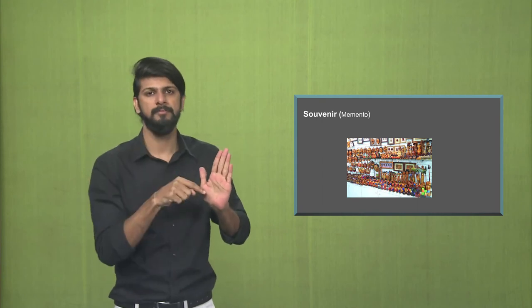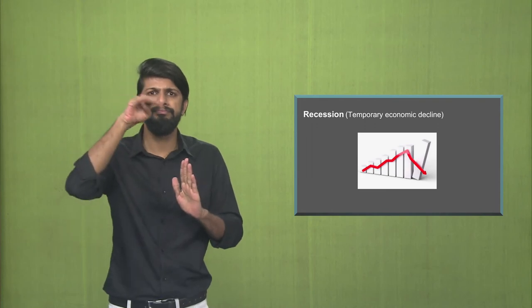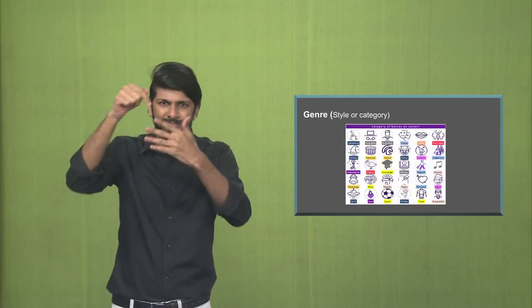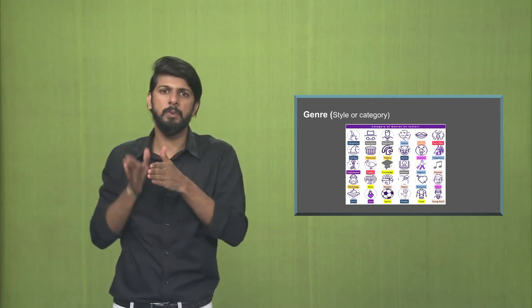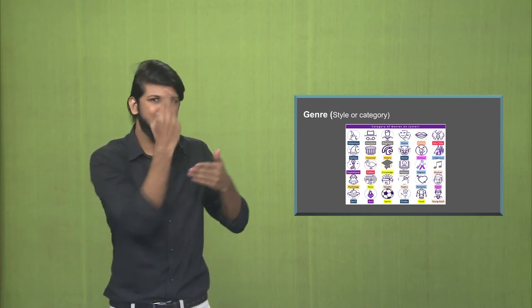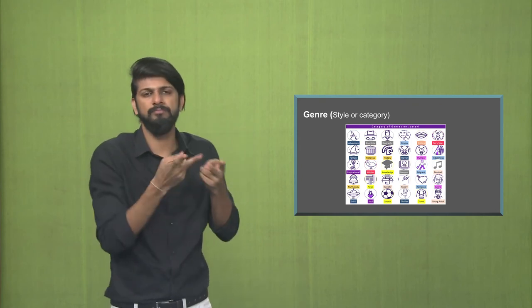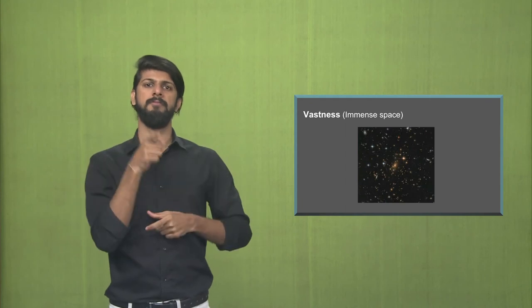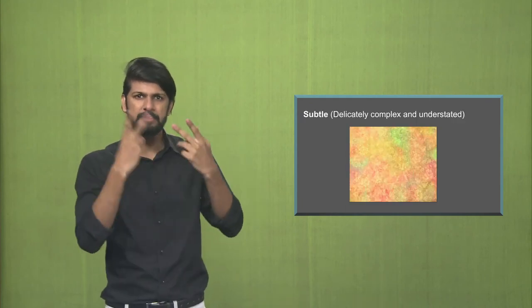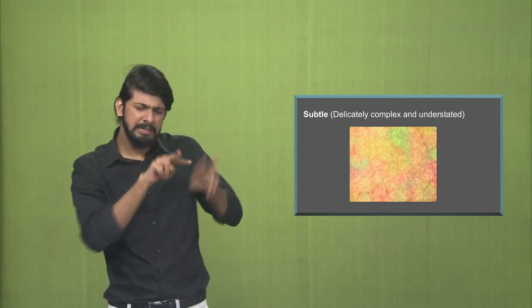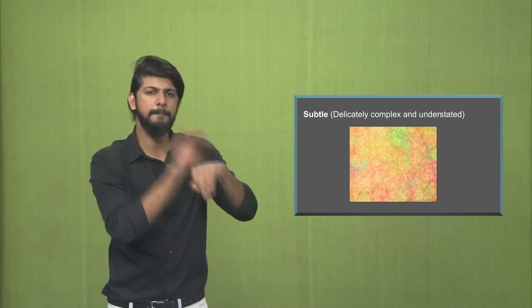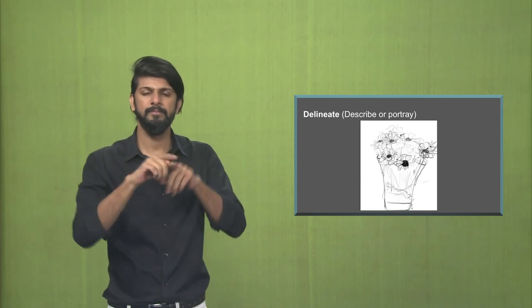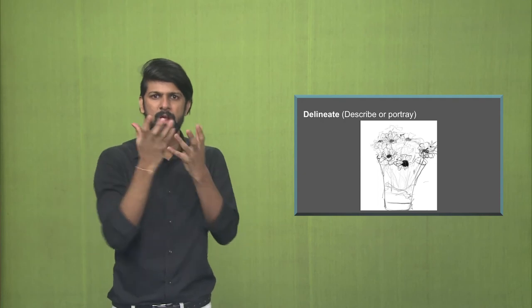Souvenir. Memento. Recession is a temporary economic decline. Genre is a style or category — in art also we have various kinds of genres or styles. Vastness is something which is immense, very big. Subtle is something which is delicately complex and understated — as you see in this picture, there are a lot of patterns here which are very delicate and subtle. Delineate is to describe or portray.